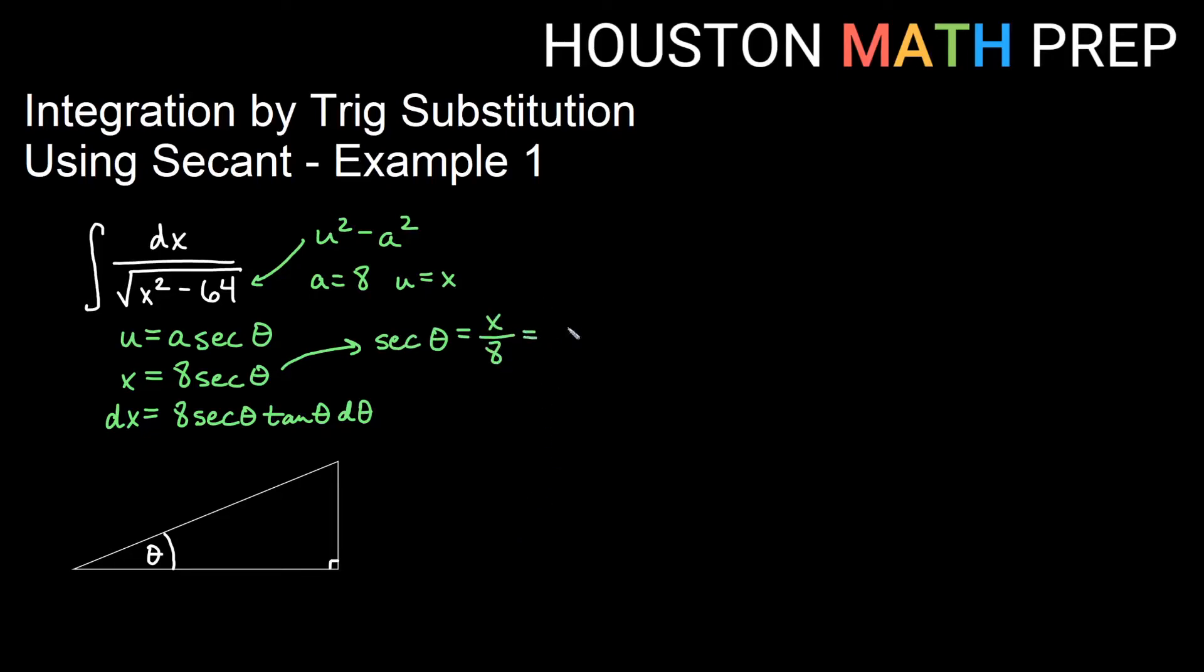And if you remember, secant theta is the hypotenuse over the adjacent. It's the reciprocal of cosine, which is adjacent over hypotenuse. So the x is my hypotenuse in this case, and 8 is adjacent to my angle theta.